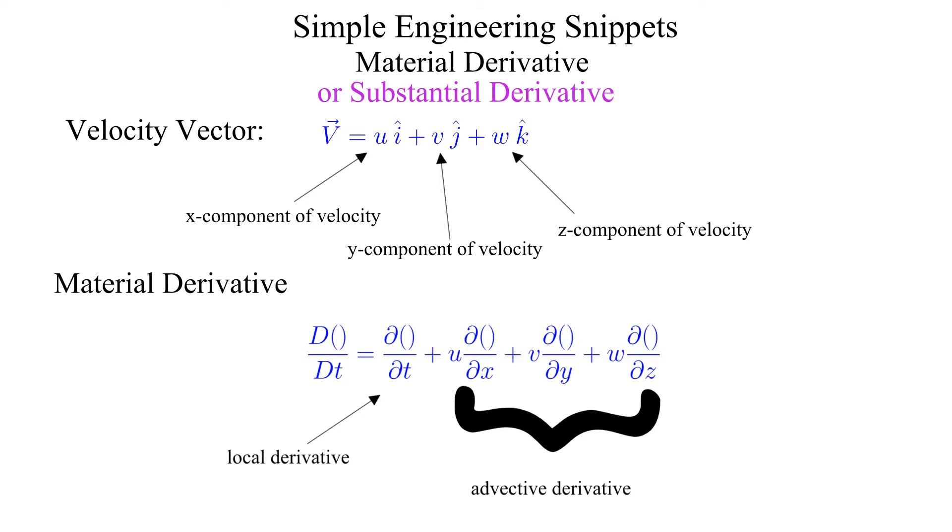Physically, the local time derivative accounts for the transient behavior of the entire flow field. The advective derivative accounts for the transient a particle experiences as it transits to different parts of the flow field. We will go over some examples to help clarify.